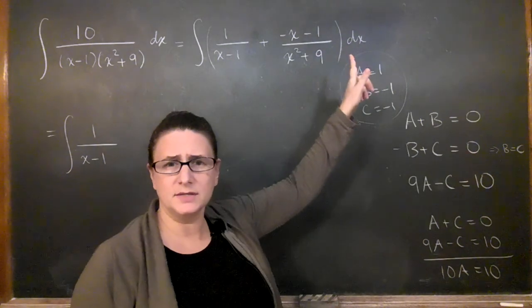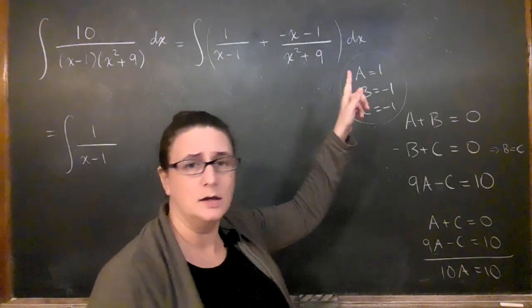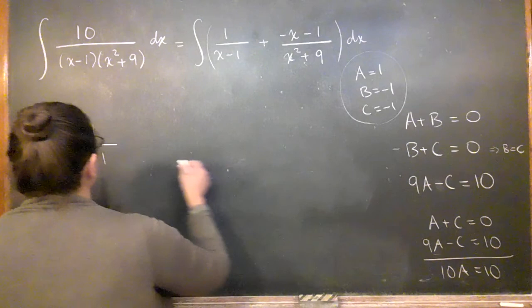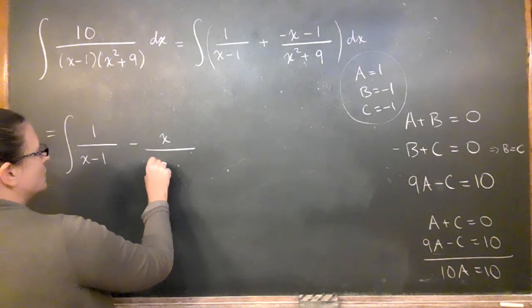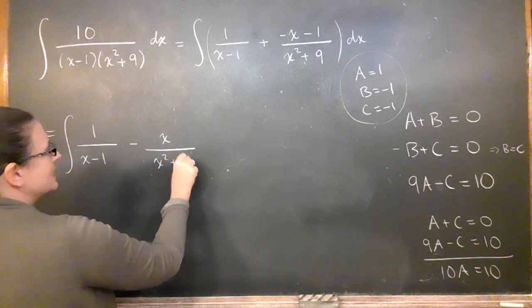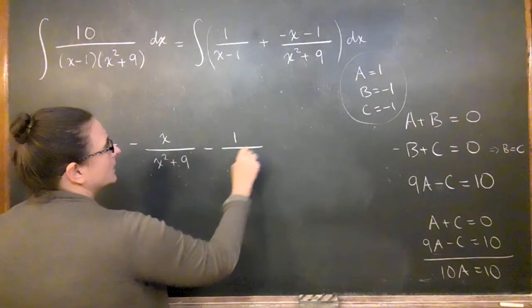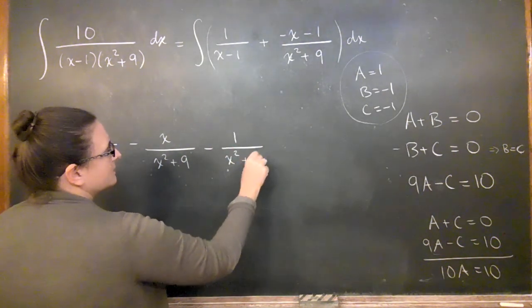What I want to do with this is I want to split it up into two pieces, okay? So I want this first one to be minus x over x squared plus 9, and then minus 1 over x squared plus 9.